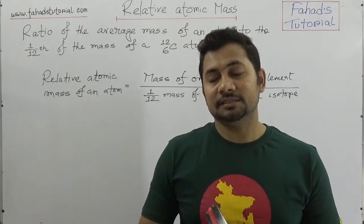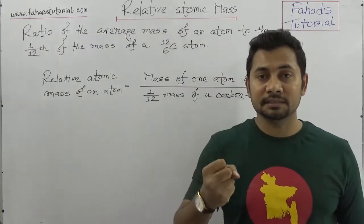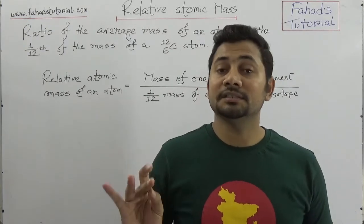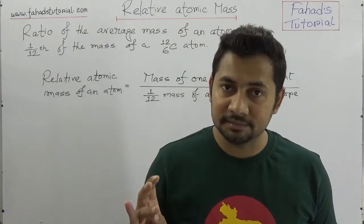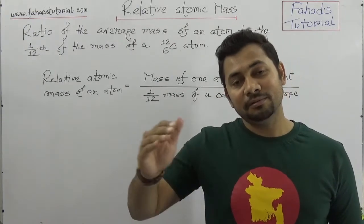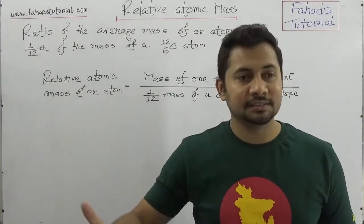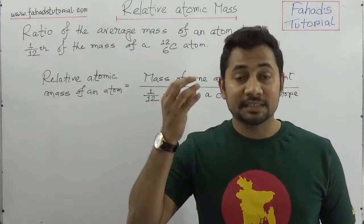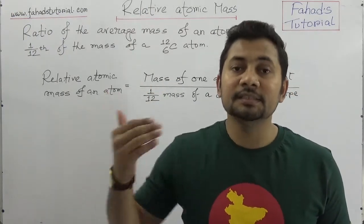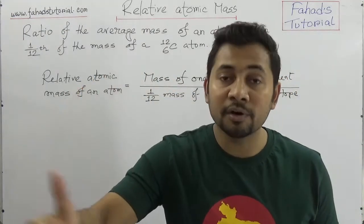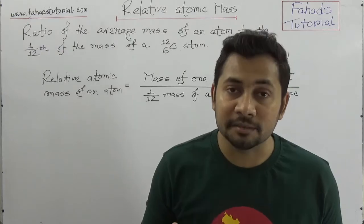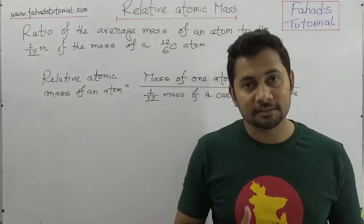I am saying it again and again because this is the fundamental foundation of chemistry. I already said that structure of matter, structure of atom, and periodic table — these three chapters are the basic of chemistry. Because when we go to the next levels, like doing reactions and understanding radicals and atoms, relative molecular mass — these are important. So to understand relative molecular mass, we need to know first what is relative atomic mass. And this lecture is about relative atomic mass.